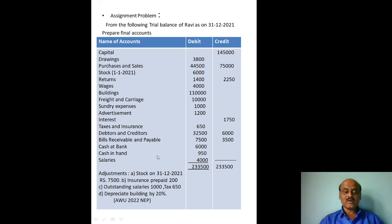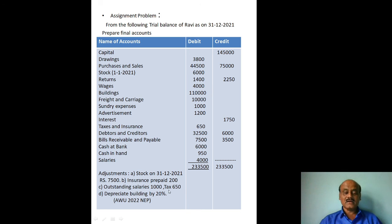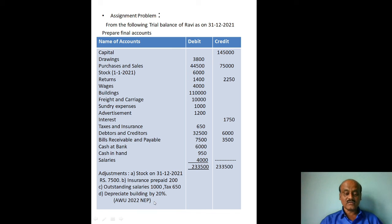Depreciation Rs. 22,000 goes to profit and loss account debit side. Building in balance sheet: Rs. 1,10,000 less Rs. 22,000 depreciation. So this completes the trading account, profit and loss account, and balance sheet — the three final accounts of a sole trader. Practice this problem as an assignment. Till then, goodbye.